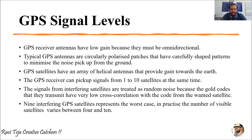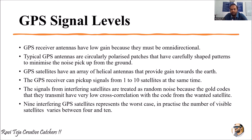Almost nine interfering GPS satellites represent the worst case in practice. The number of visible satellites is generally between four and ten. Three satellites are used for position determination and the fourth satellite is to minimize the error. In reality, between four to ten satellites will be varying with respect to the GPS receiver.